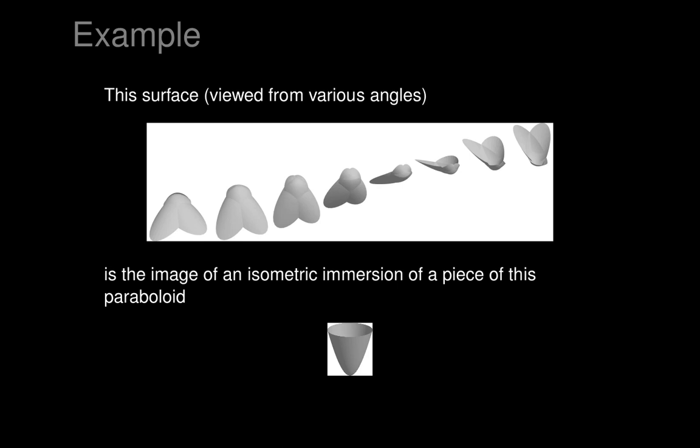So we've somehow cut out a chunk of the paraboloid — something roughly like a disc drawn on the paraboloid — and wrapped it around itself in some simple way and constructed that nice little picture. That's the kind of thing we want to do: cut out a chunk of a surface and wrap it around itself to come up with a nice isometric immersion of it, so the lengths of curves drawn on the surface don't change.